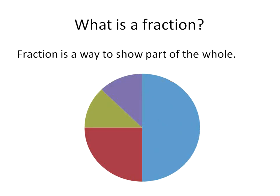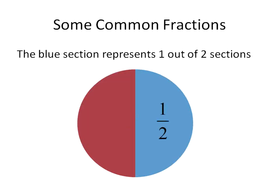We'll start by talking about what is a fraction. A fraction is just a way to show part of a whole number. So for example, this is a very common fraction, one half. The blue section represents one part out of two full sections, two sections that are equal. So this would be one section out of two and the whole thing, of course, being the circle.